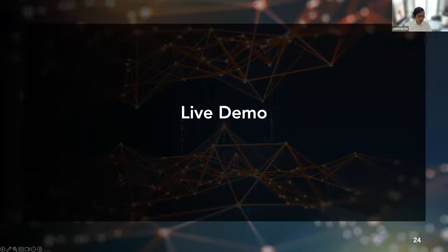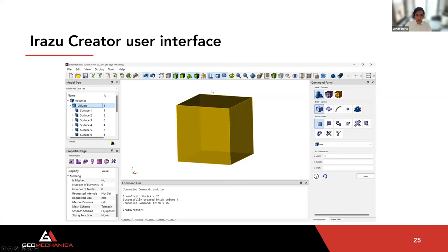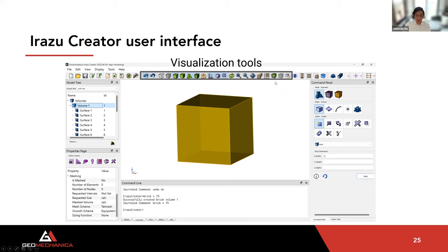Thank you Omid for the introduction. Now I'll jump into a live demonstration of Irasu Creator. Here is a screen capture of the default layout. At the top are several visualization tools that allow you to toggle between different visualization modes — wireframe mode, transparent mode, and shaded mode. There's also an option to clip the geometry or mesh, which is especially useful in 3D, allowing you to section through it and quickly assess geometry and mesh quality.